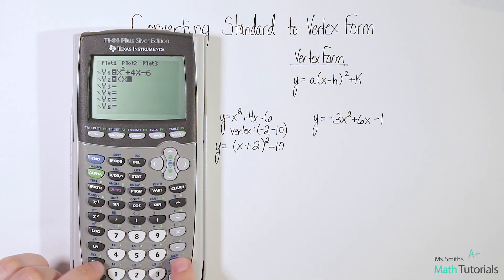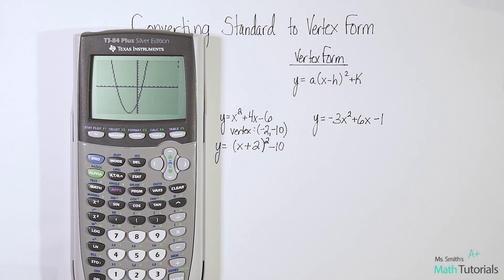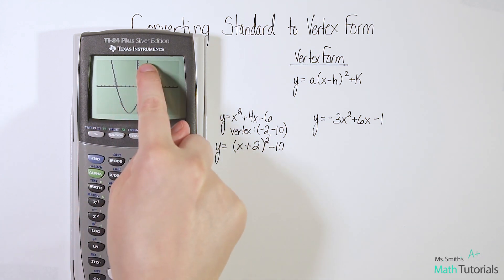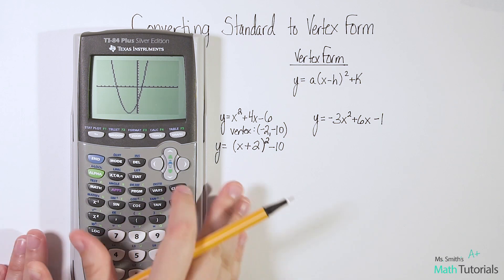Parenthesis, x plus 2, squared, minus 10. Now we're going to graph it, and if we've done it right, it should graph the same line twice. We should not be able to see any difference. See that it's done graphing, and we have the same line was graphed twice. So that's a way to quickly double check yourself.